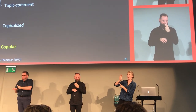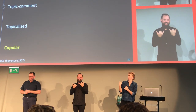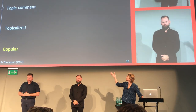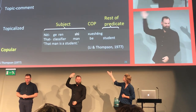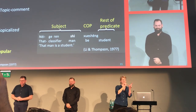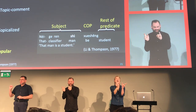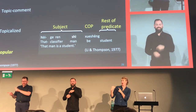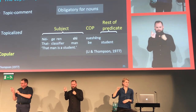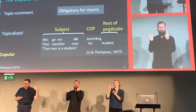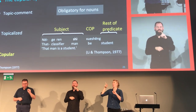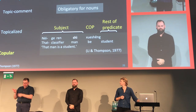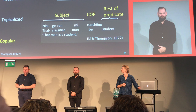What I'd like to do now is show you the copula structure, but I will use modern Mandarin for examples. As you can see, you can see the connection between the two. This is modern Mandarin, and it's used predominantly for nouns — it's obligatory. The student is a noun, so there must be a copula before that. It's not obligatory for adjectives or verbs.